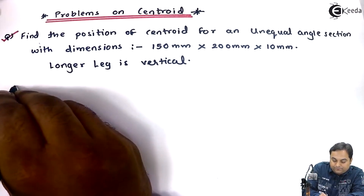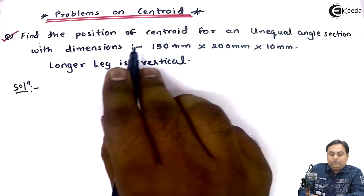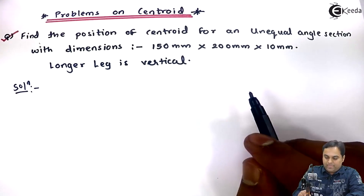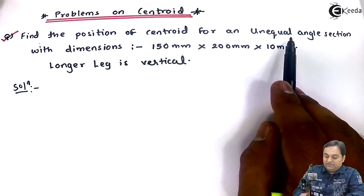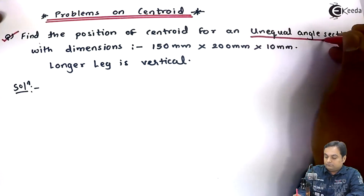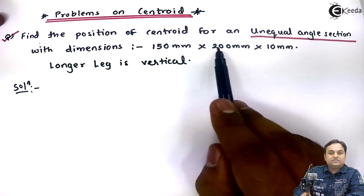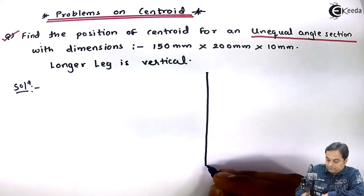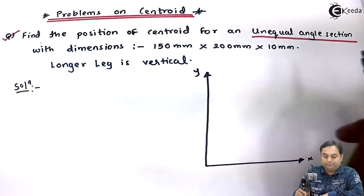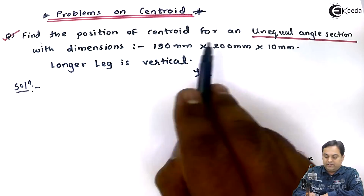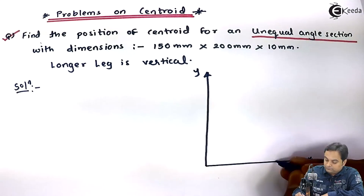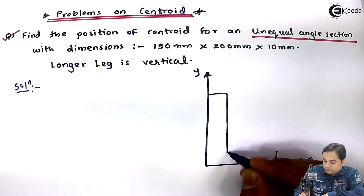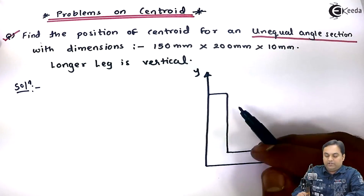In the solution, we have to find the position of centroid. By position of centroid, we mean that we have to calculate x̄ and ȳ values. The angle section is an unequal angle section. I will draw it first. The dimensions are 150 x 200 x 10: 150 mm is the width, 200 mm is the height, and 10 mm is the thickness.